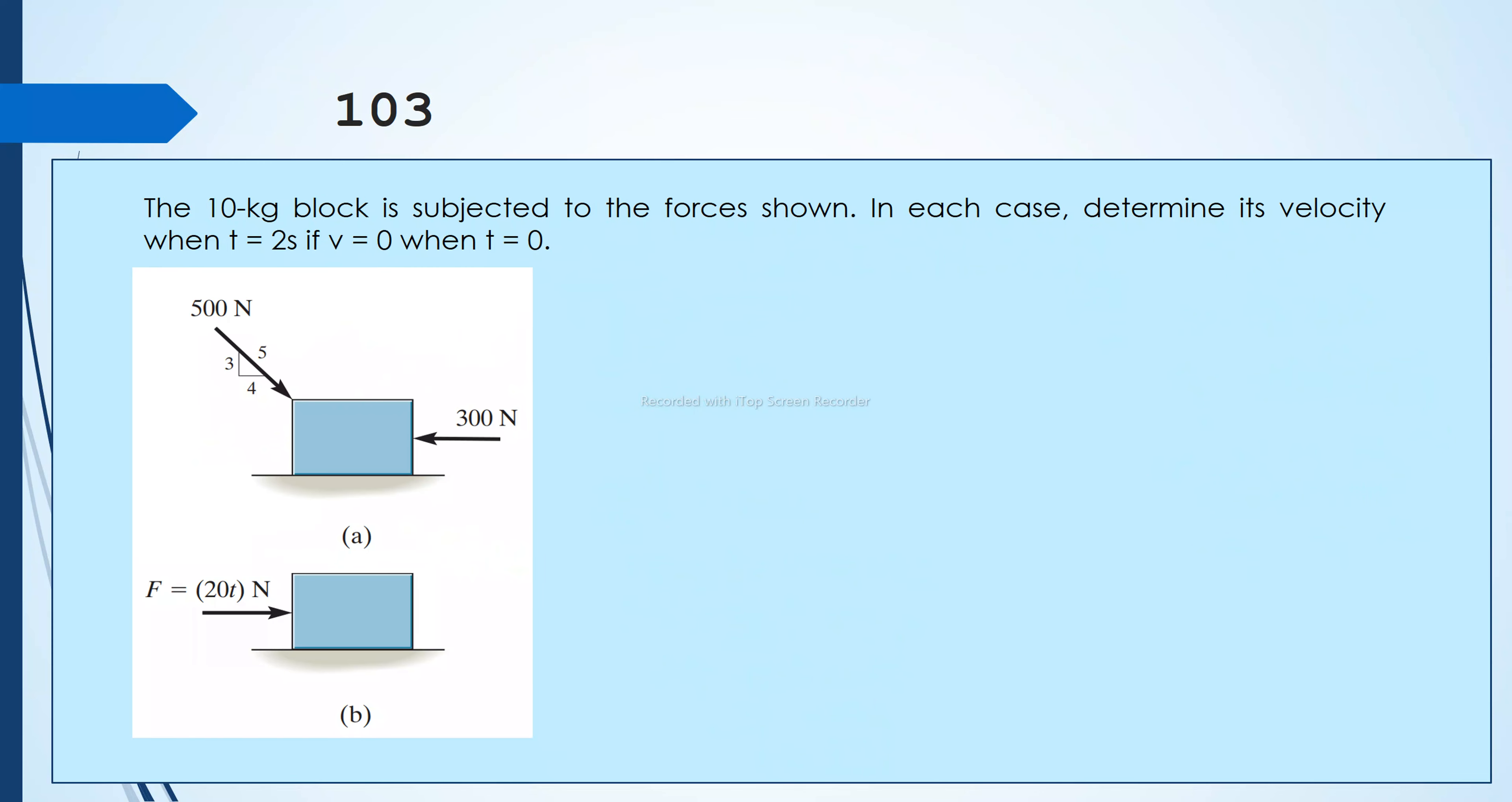This is for our case a, we already have our answer. Let's proceed to our case b. For our case b, if we draw the FBD, we know that the force is acting only towards the right, the acceleration is obviously towards the right. Okay, next we write the summation of forces along x is equal to mass times the acceleration along x.